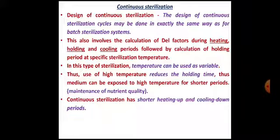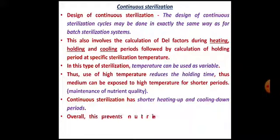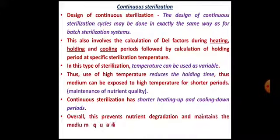Continuous sterilization has shorter heating up and cooling down periods — that is the second difference. In batch sterilization the heating up and cooling down periods are longer, whereas in continuous sterilization these periods are shorter. Overall, this prevents nutrient degradation and maintains medium quality.